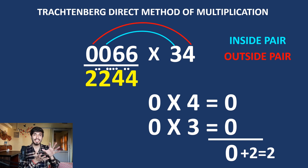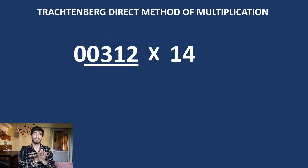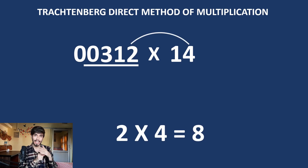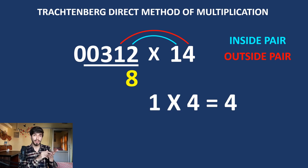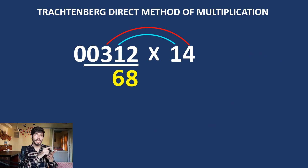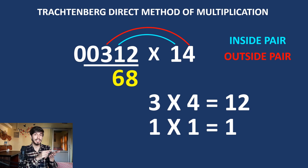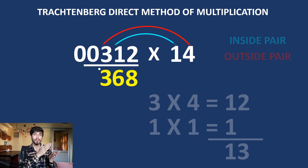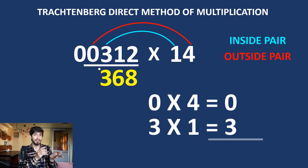Now let's increase the digits: three digits times two digits — 312 times 14. Four times 2 is 8. Inside pair, outside pair: 4 plus 2 equals 6. Move to outside pair and inside pair again: 12 plus 1 is 13 — write 3 and a dot. Move again: outside pair, inside pair — 0 plus 3 plus 1 carry equals 4. Answer: 4368. As simple as that.